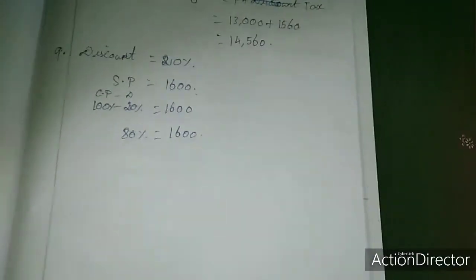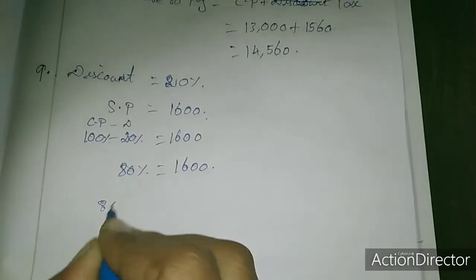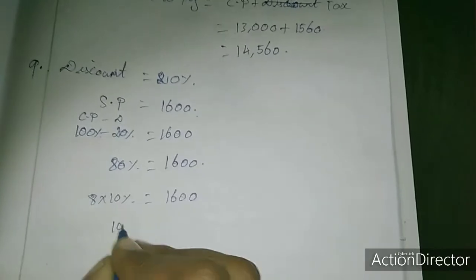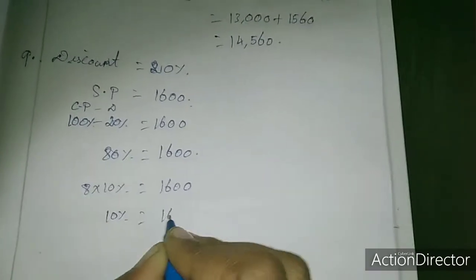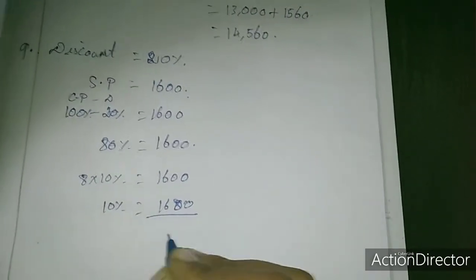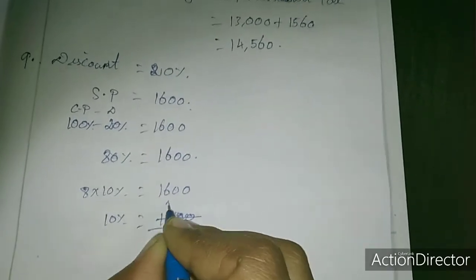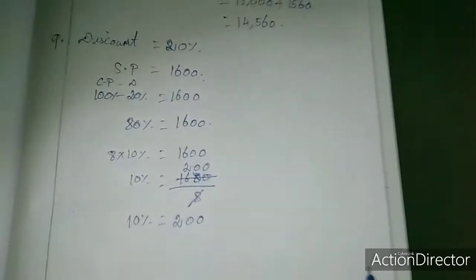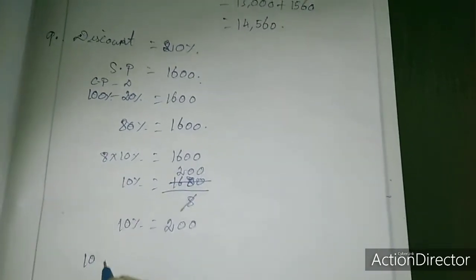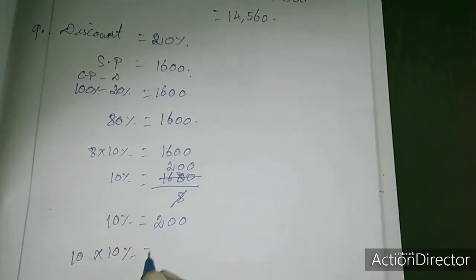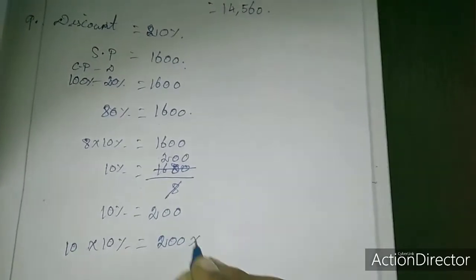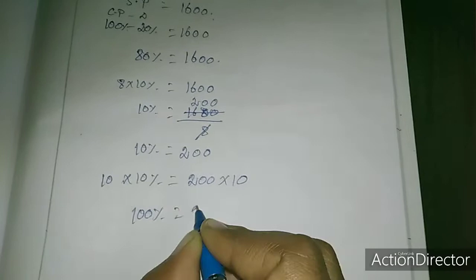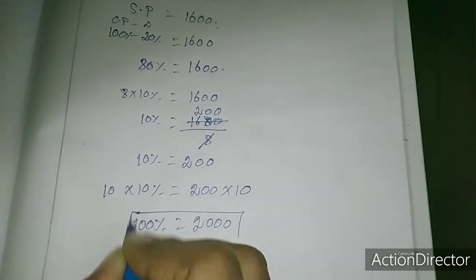Let's see, 80% equals 1,600. I will divide by 8, so 10% equals 200.